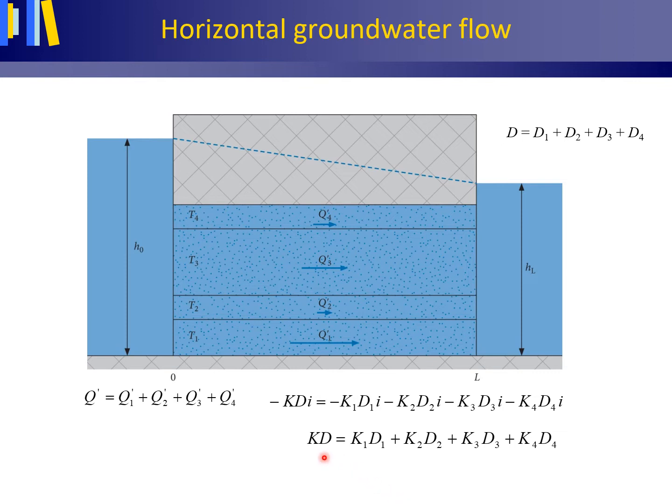This KD value, in English called the transmissivity, is a measure of how easily an aquifer transmits water and has the same unit as the volume flux Q prime, that is square meters per day.